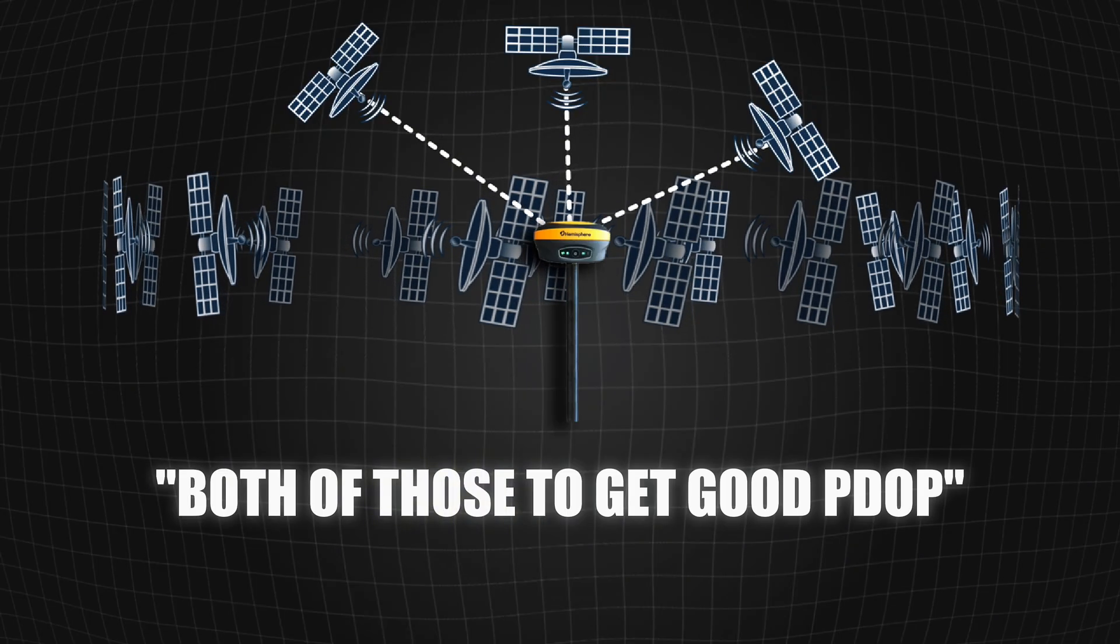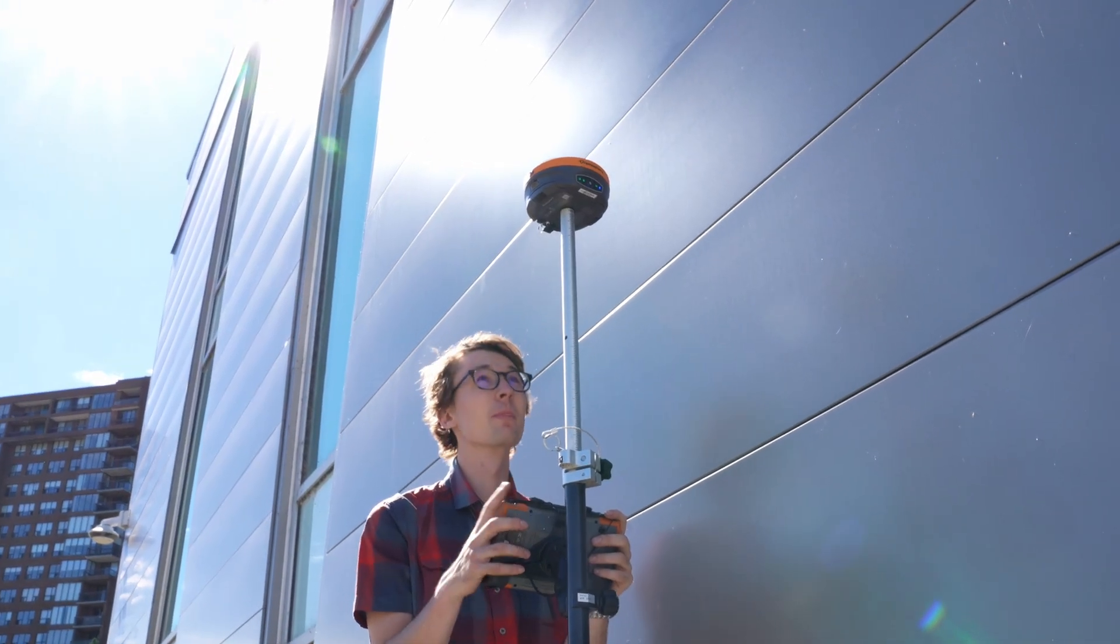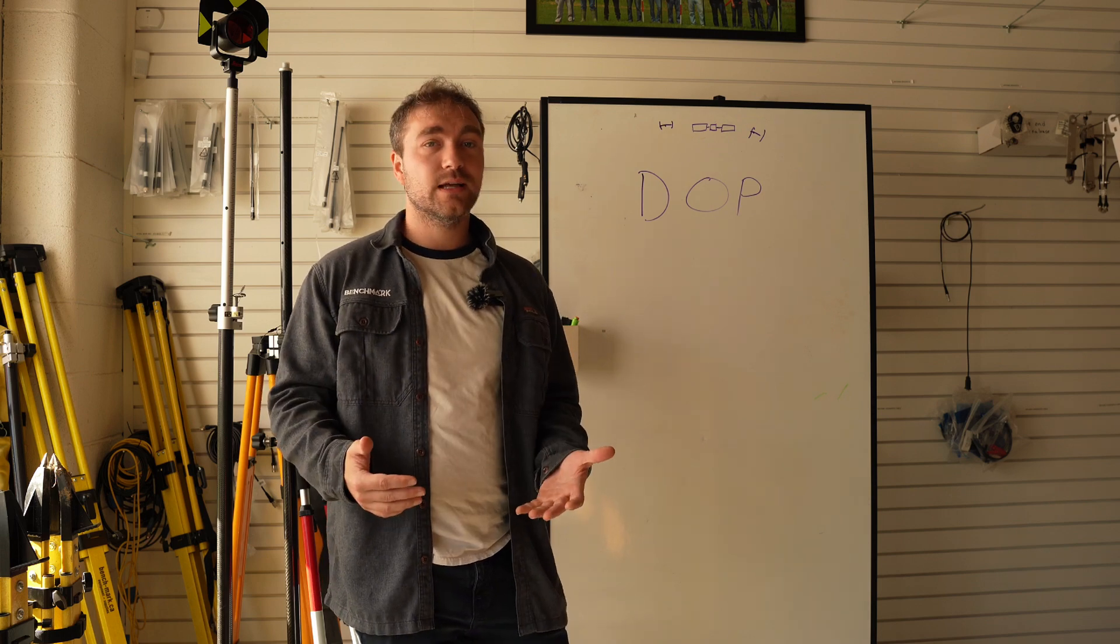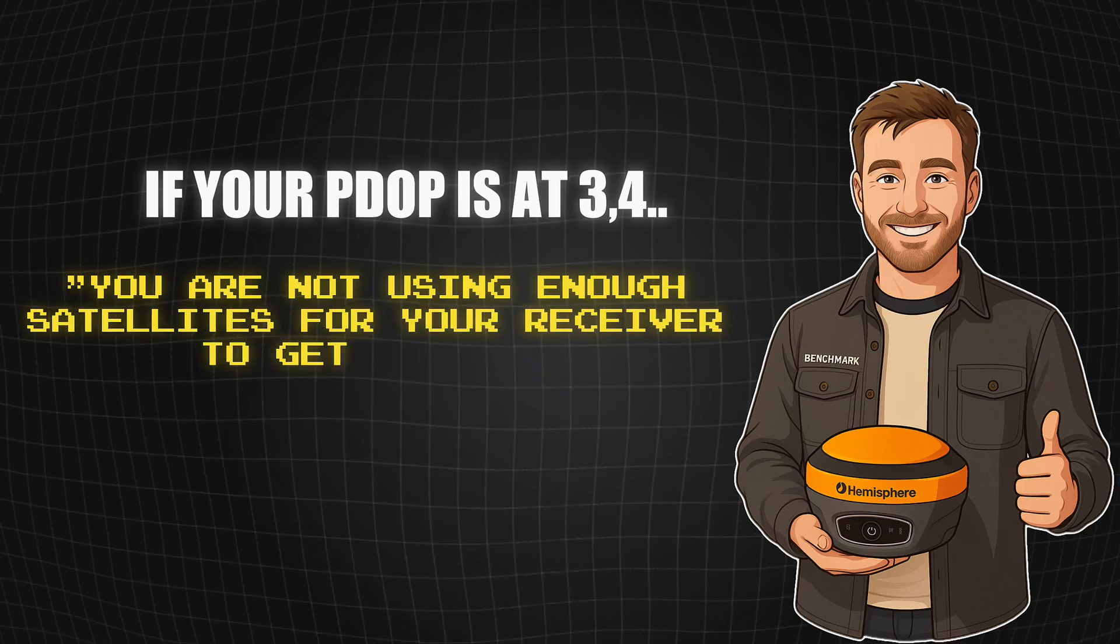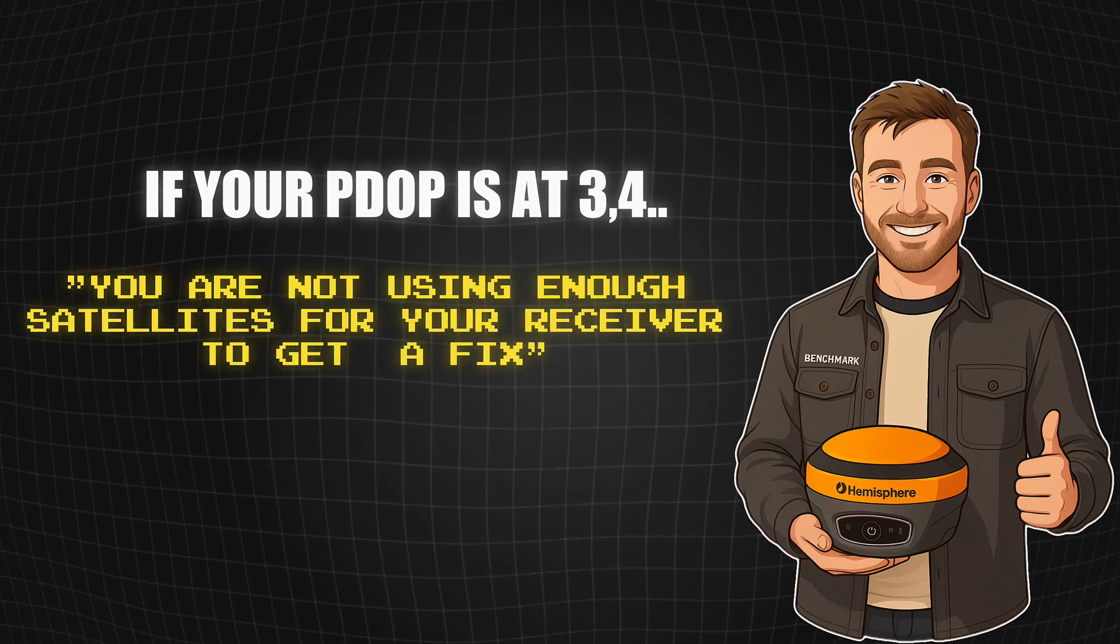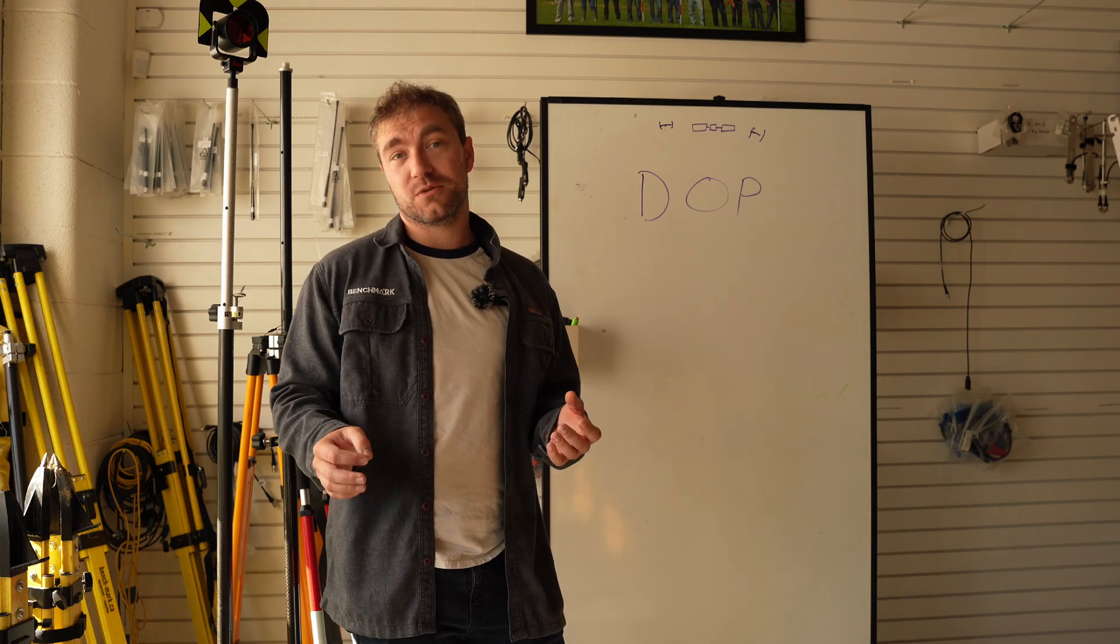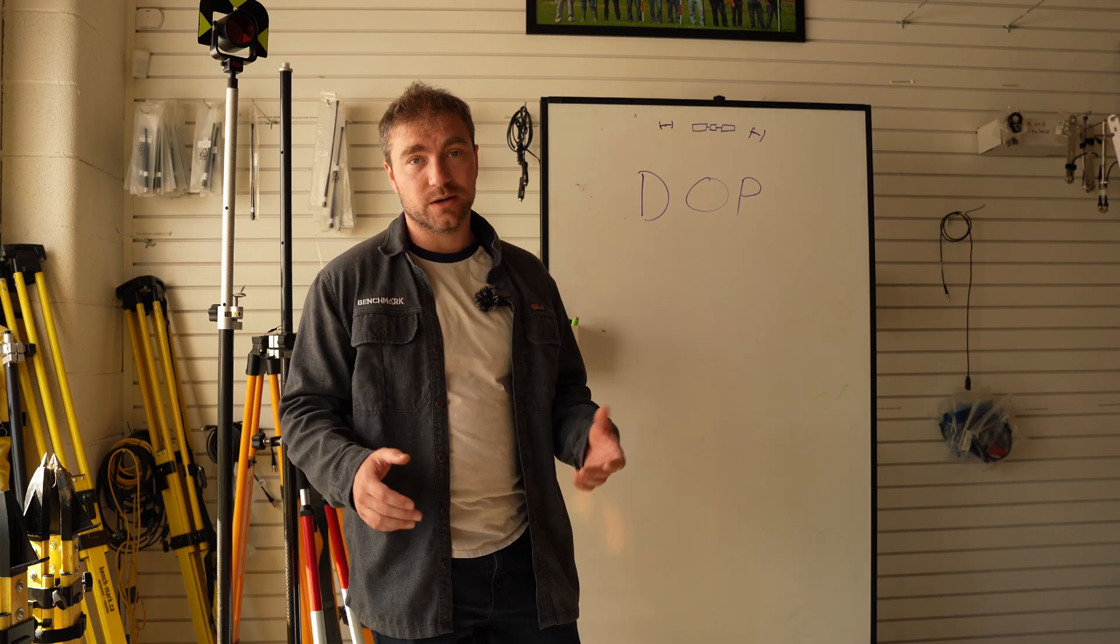And you want both of those to get a very good P-DOP. The take home for you today is if you're standing out there and you're standing in a spot, you can't get a fix. You're watching the errors. They're not shrinking. Take a look at your P-DOP. If your P-DOP's at three, four, you really aren't using a lot of satellites or all your satellites are really clustered together and it's going to make it really hard for your receiver to get a fix. It might be better just to do an offset or even worse, maybe break out the total station.